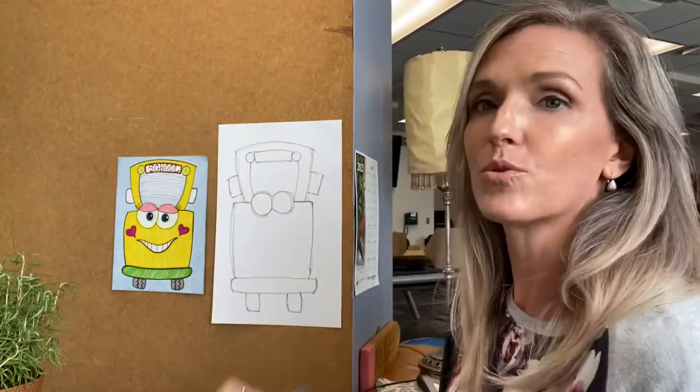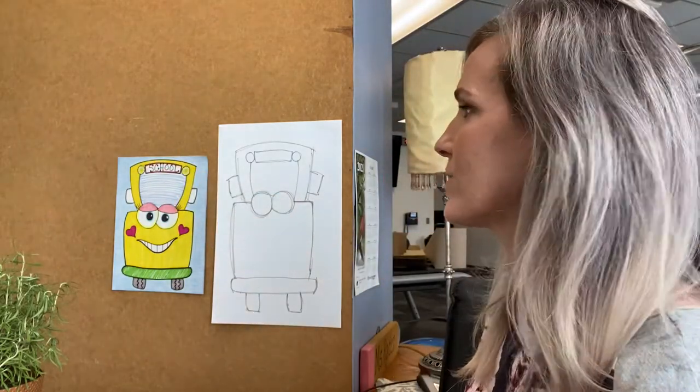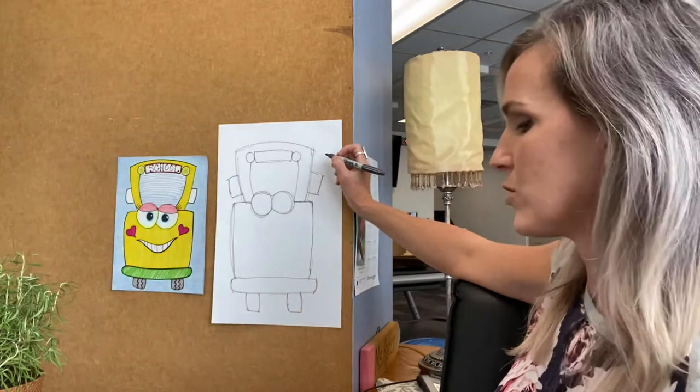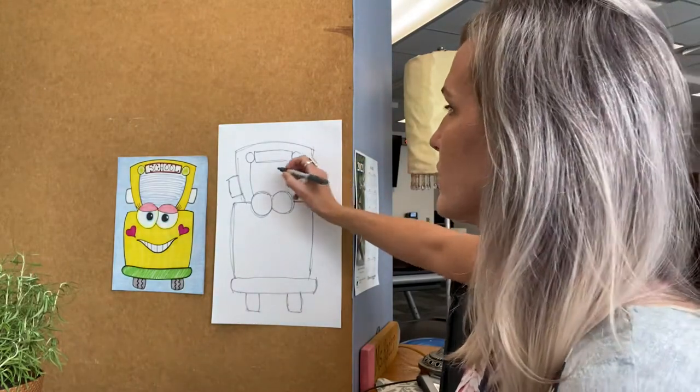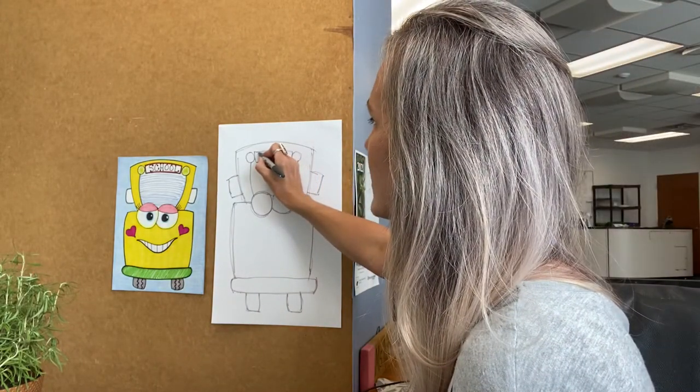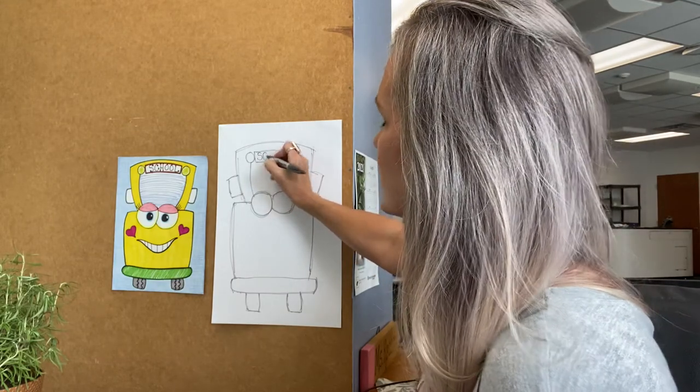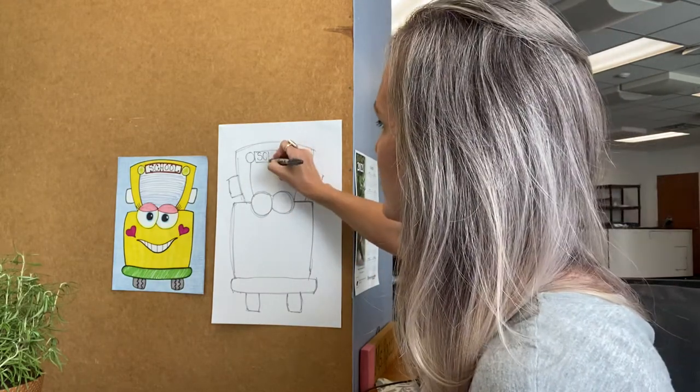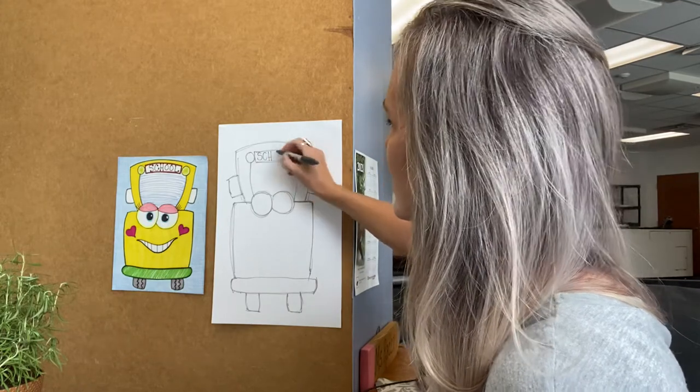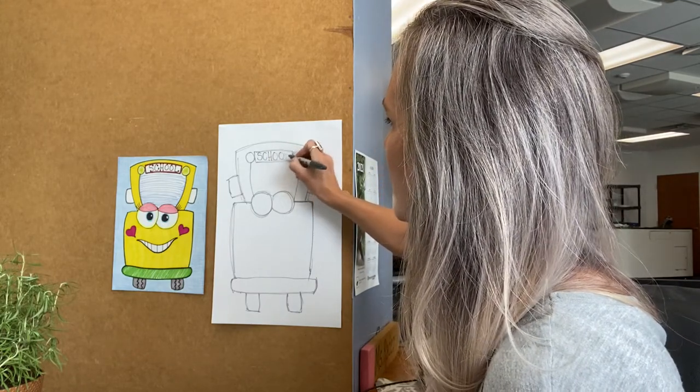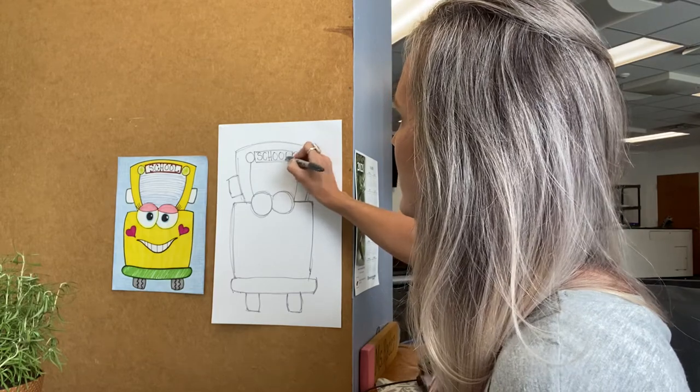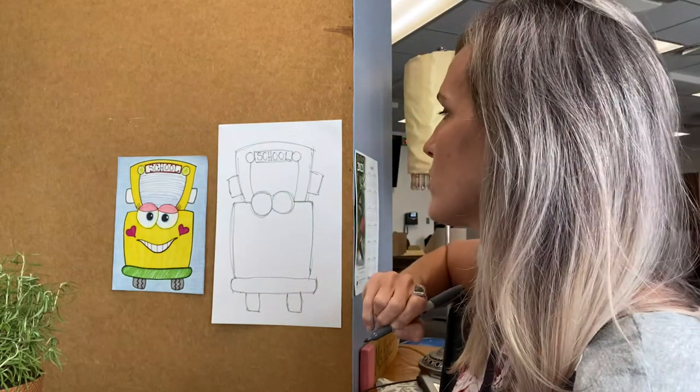We're going to write the word school. So if you're just learning your letters you can follow along with me. If you already know your letters we start with an S and I'm making mine all capital: S-C-H-O-O-L. That way we know he's a school bus or she.